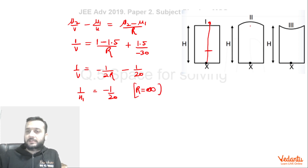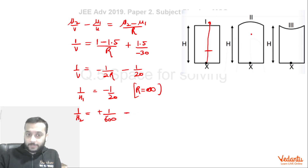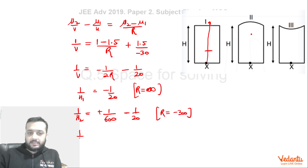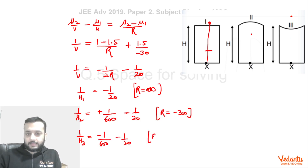For the second case (concave downward), we put R = −300 cm, because the center of curvature lies below the refracting surface while the incident ray goes upward. This gives an additional positive term, making 1/H2 in magnitude less than 1/H1. For the third case (concave upward), R = +300 cm, since the center of curvature lies above the refracting surface and the ray is also going upward, giving 1/H3 in magnitude greater than 1/H1.